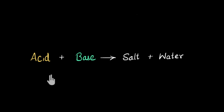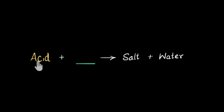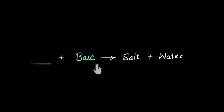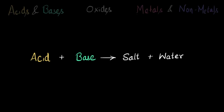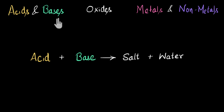In a previous video, we saw that acids react with bases to give us salt and water. Based on this, we also said that if something reacts with an acid and gives us salt and water, then that something has to be a base. Similarly, if something reacts with a base to give us salt and water, then that something has to be an acid. Now we are going to use this same property to study how acids and bases react with oxides of metals and nonmetals. This will tell you a lot of surprising things about metals and nonmetals.